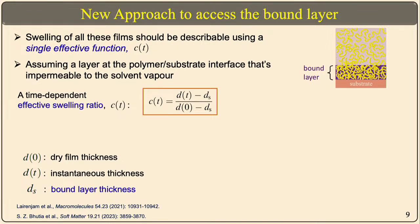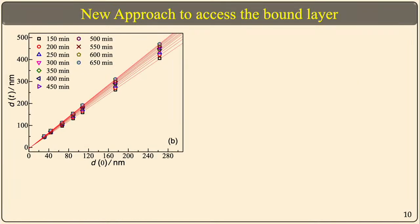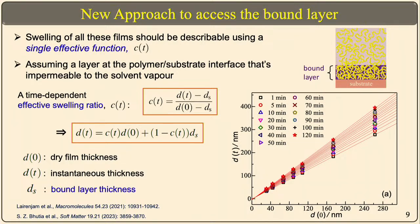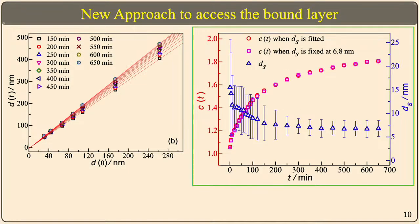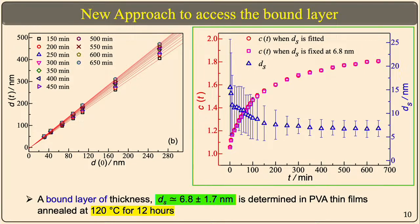This is the conclusive plot: the instantaneous film thickness as a function of time of exposure to swelling, performed for around 650 minutes, for different dry film thicknesses ranging from 31 nanometers to 263 nanometers. Interestingly, when you have a very thin film it swells very little, but with increment in thickness the swelling keeps increasing. This doesn't follow macroscopic thermodynamics, which says swelling should be the same for all films with the same polymer-substrate interactions and preparation method.